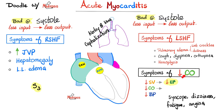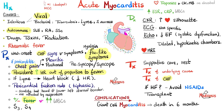What are the symptoms of low cardiac output? Because I cannot perform systole, I get low stroke volume, low ejection fraction, low cardiac output — and exercise intolerance, syncope, dizziness, fatigue, angina, and much more. Acute myocarditis causes include infectious causes like viruses, autoimmune causes, drugs, toxins, and radiation. Don't forget rheumatic fever because it causes carditis.